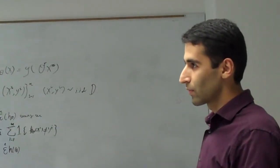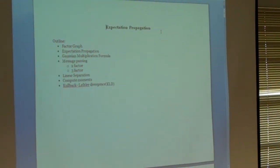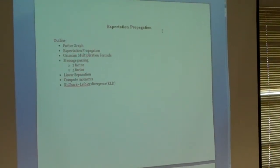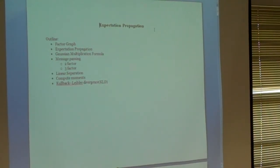I start to review the factor graph, after that say something about the expectation propagation and the formula needed to find the value of some parameters in the expectation propagation. And after that go to message passing in the factor graph and try to explain some topology in the factor graph.